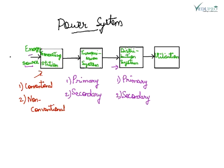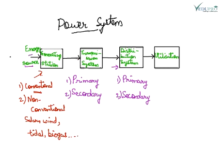The conventional type includes thermal systems, hydroelectric systems, and nuclear systems. The non-conventional system includes generating electrical energy from solar energy, wind energy, tidal energy (that means wave energy), biogas, and so on. So, generation of electricity is being done by these two methods — conventional: hydro, thermal, or nuclear; and non-conventional: solar, wind, tidal energy, biogas, etc.